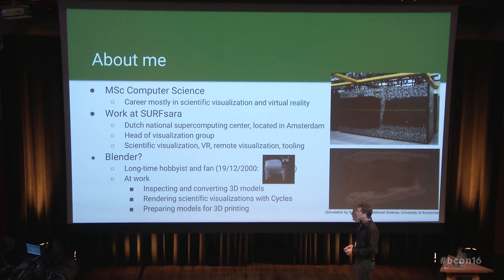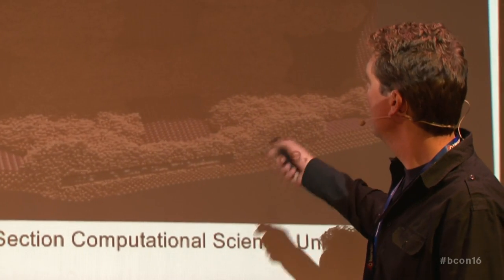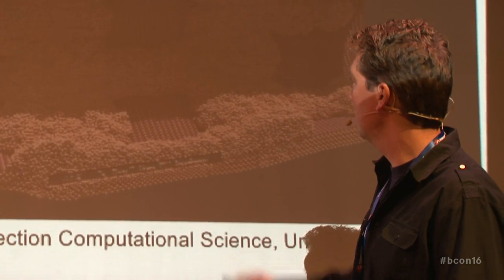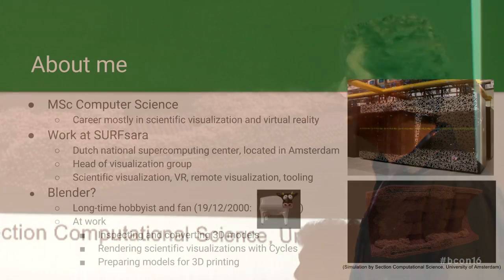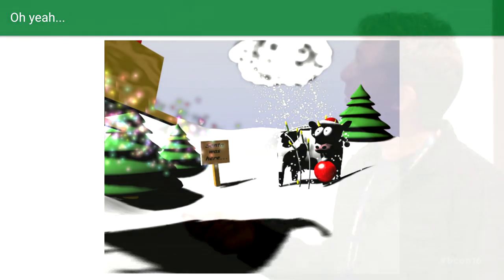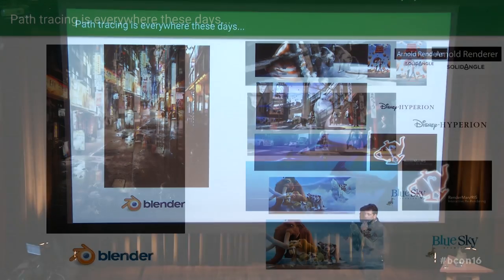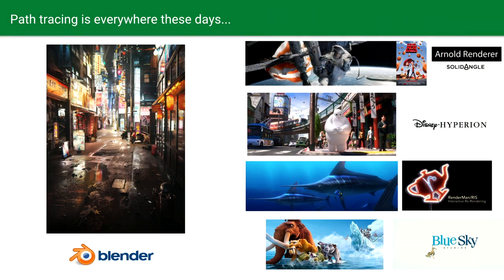At work we use Blender a little bit — I would like to use it more, but it's not always a good fit for scientific data. This is one of the things we did as a scientific rendering of some data — a little piece of artery near the heart. We also use it for 3D printing to prepare models these days. But I don't want to talk about that. I want to talk about path tracing and Cycles in particular.